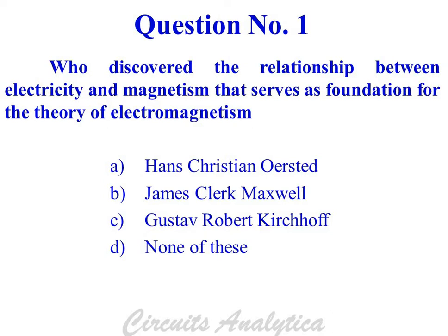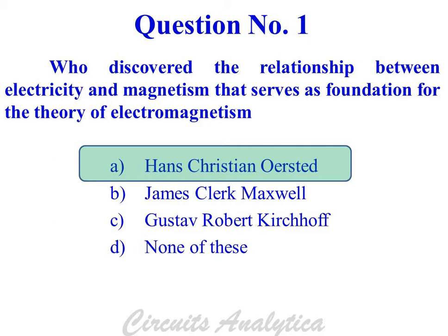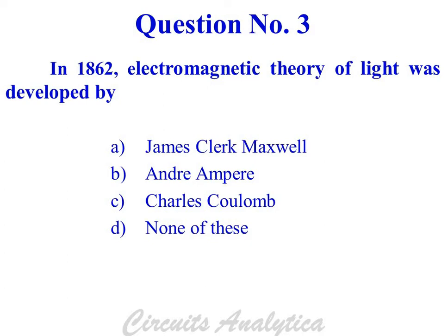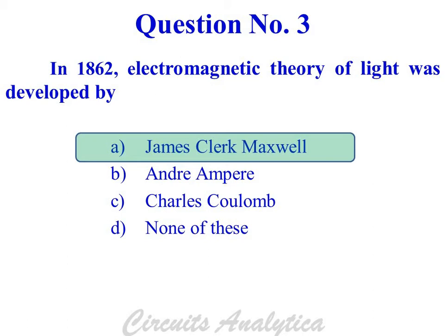Who discovered the relationship between Electricity and Magnetism that serves as the foundation for the theory of Electromagnetism? Hans Christian Orsted. In 1831, the theory of Electromagnetic Induction was demonstrated by Michael Faraday. In 1862, the Electromagnetic theory of light was developed by James Clerk Maxwell.